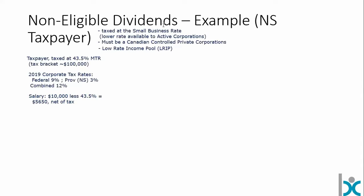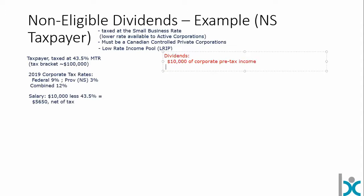Now, what if we decide to take dividends? Same deal — we've got $10,000 of corporate pre-tax income. That salary would have been deductible for the corporation, but if it's going to pay dividends, it's using its after-tax dollars. So we have to knock off that 12% corporate tax rate — the combined federal and provincial 12%. That leaves us with $8,800 left to pay as a dividend, and that's what you would actually see paid to this particular shareholder.